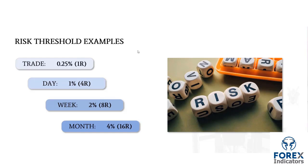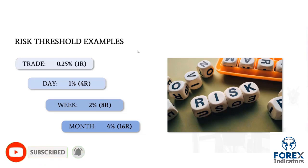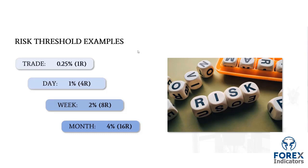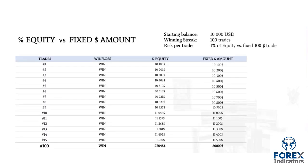I'd recommend no more than 1% per trade and no more than 9% to 9.5% max risk per month. The reason: statistics are clear that every time you have a double-digit monthly drawdown — 10% or higher — the statistical probability that you'll recover your account goes down exponentially. So you want to avoid that as much as possible. Now let's talk about percent equity risk model versus fixed dollar amount and show you which one performs better.